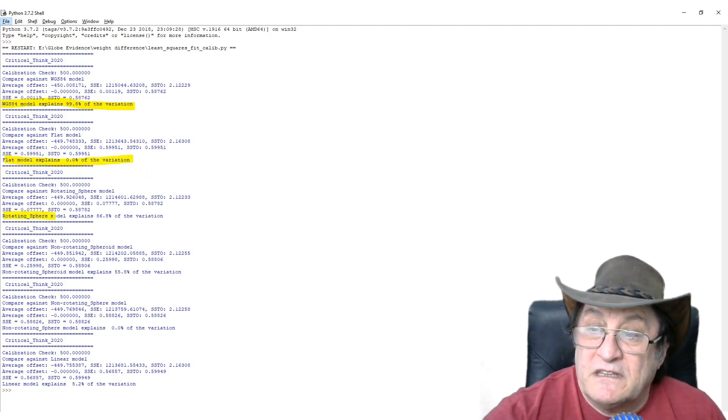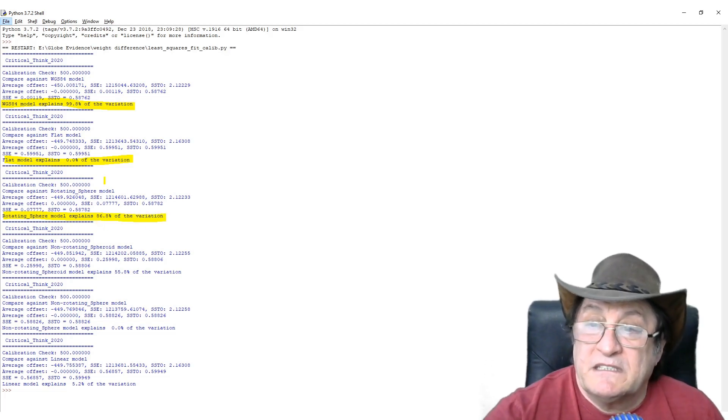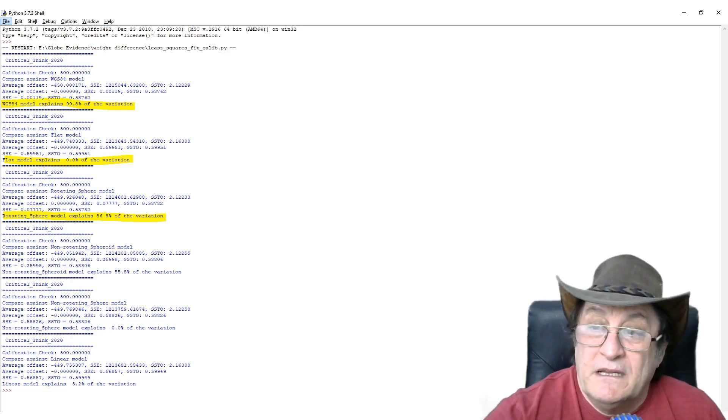And so the flat earth model explains zero percent. Here's another thing, interesting thing, rotating sphere. It's only 86 percent. So you see, the spheroid versus the sphere, 86 percent is not too bad, but it's not real good. So the spheroid is the shape that matches and not a sphere.